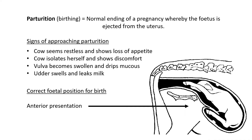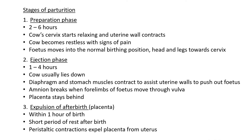Your stages of parturition happen in three main stages. The first is called the preparation phase, which lasts roughly two to six hours. The cow's cervix and the birth canal start to relax, and the uterine walls begin to contract — the cow experiences mild contractions as the body prepares. The cow also becomes restless and shows signs of pain, signaling to the farmer that something is about to happen.